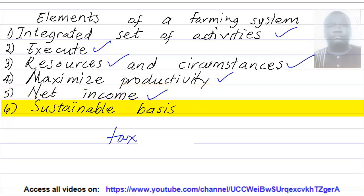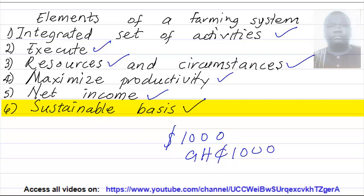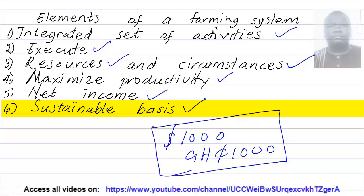Finally, sustainable basis. When I say sustainable basis, it means being at a steady level — that what you have earned will be enough for you; it will not be exhausted. Assuming you have gotten 1000 cedis as a farmer, will you be able to live on this? Will it get finished so easily? In a farming system, you should be able to get income that will be able to sustain you as a farmer or the farm business.